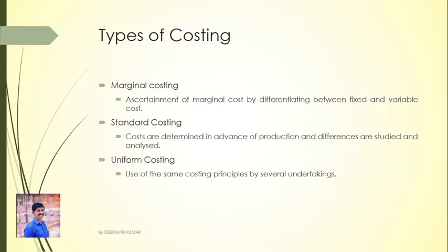Next is Marginal costing. It refers to the ascertainment of marginal cost by differentiating between fixed and variable cost. It is developed to overcome the limitations of absorption costing. Marginal costing differentiates between fixed cost and variable cost, whereas absorption costing does not.